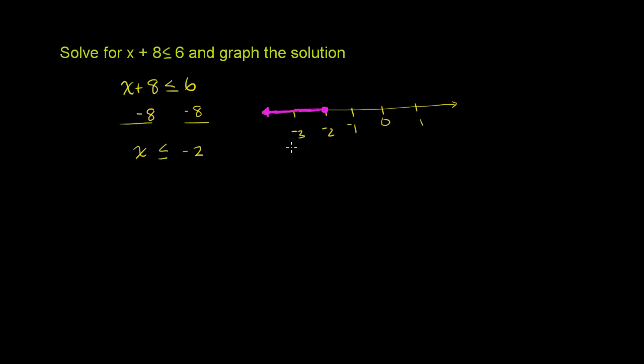You could just sample a few and verify for yourself that they work. Based on this, -3 should work. If you took -3, -3 + 8 is 5, which is definitely less than 6. So that works. And -1 shouldn't work. It's not included in this set over here. So let's try that out. -1 + 8 is 7, which is definitely not less than 6. So just sampling some points, it seems like we've got the right solution.